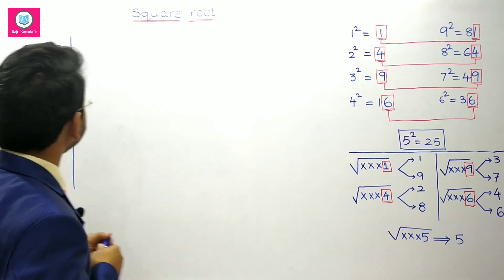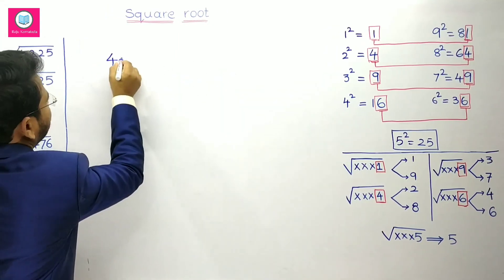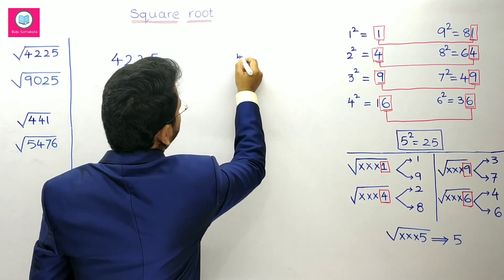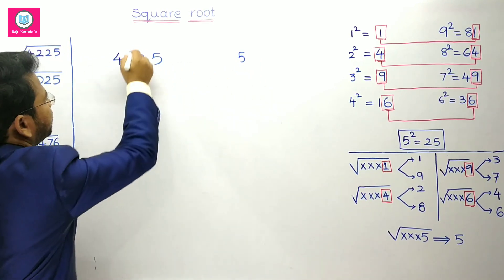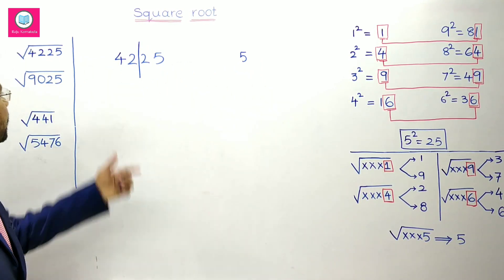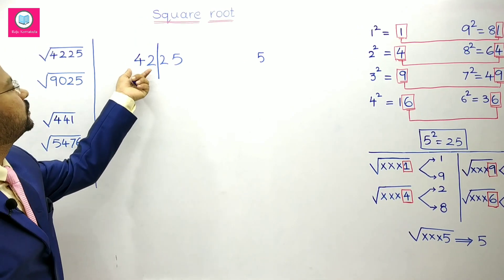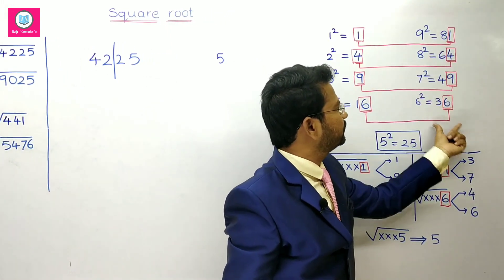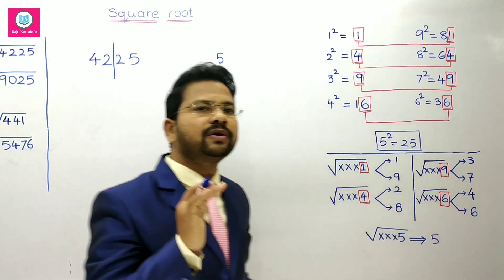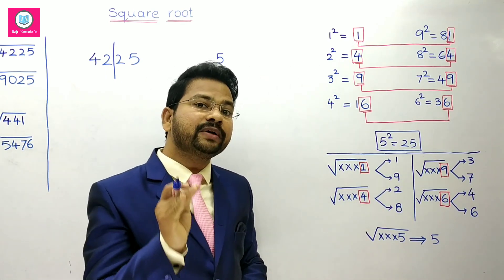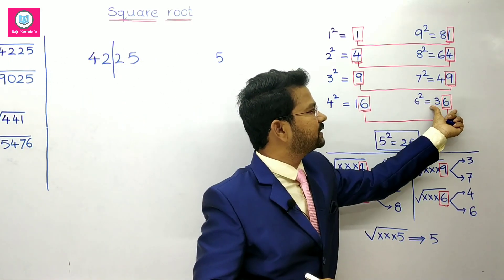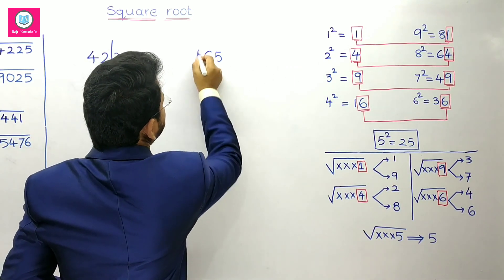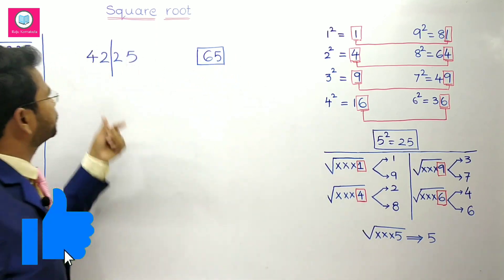Observe the example 4225. The number ends with 5, so the units digit of the square root must be 5. Now leave these last two digits 25. The remaining number is 42. Search for the nearest perfect square smaller than 42, which is 36. Since 36 is the square of 6, we take 6. So 65 is the square root of 4225.